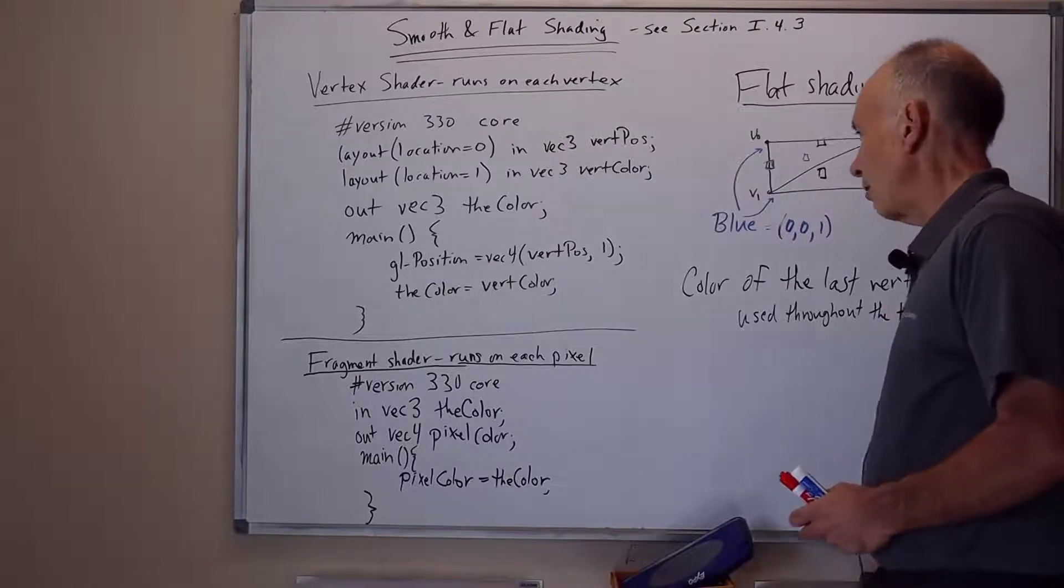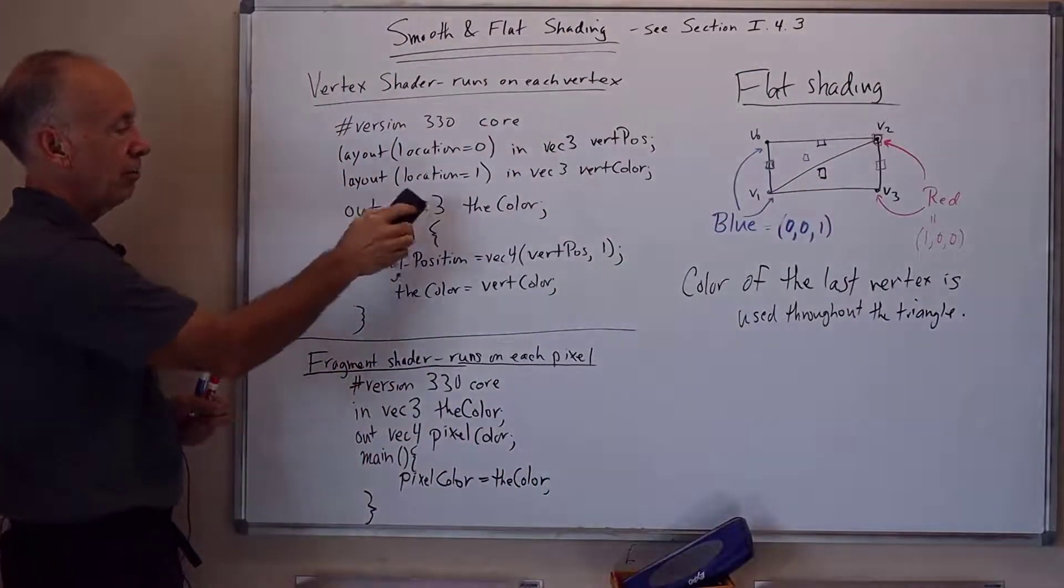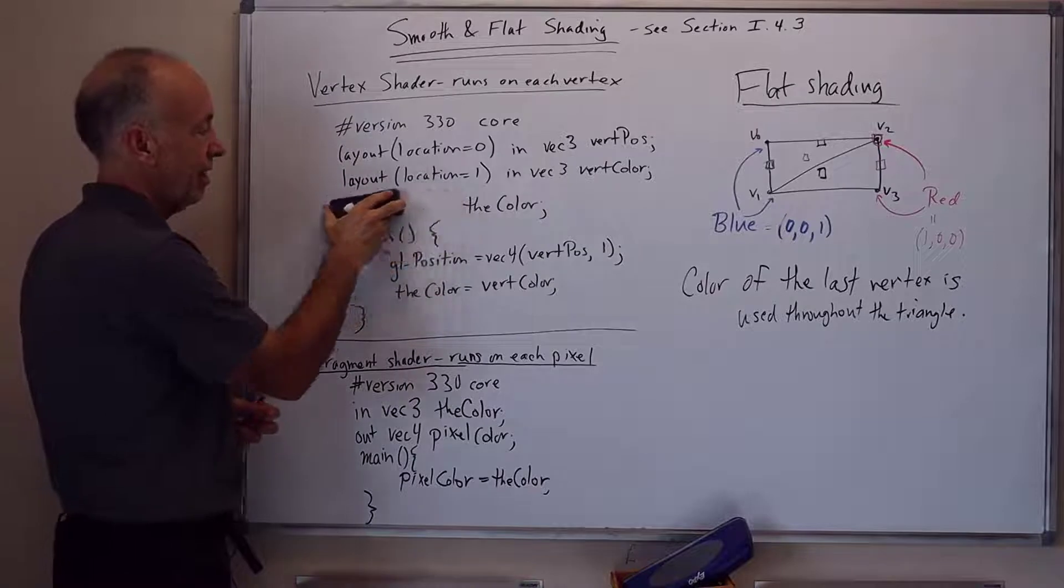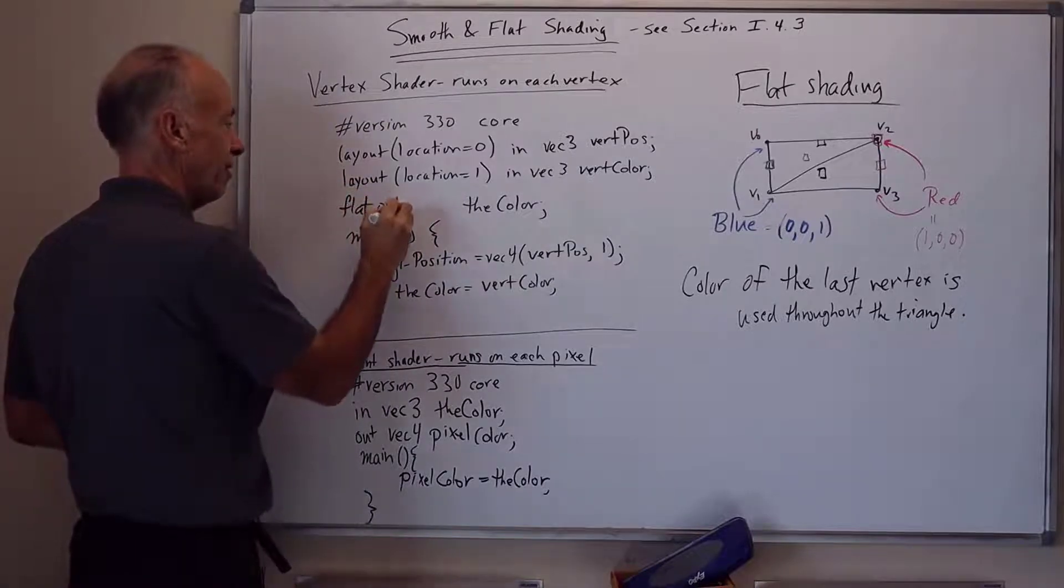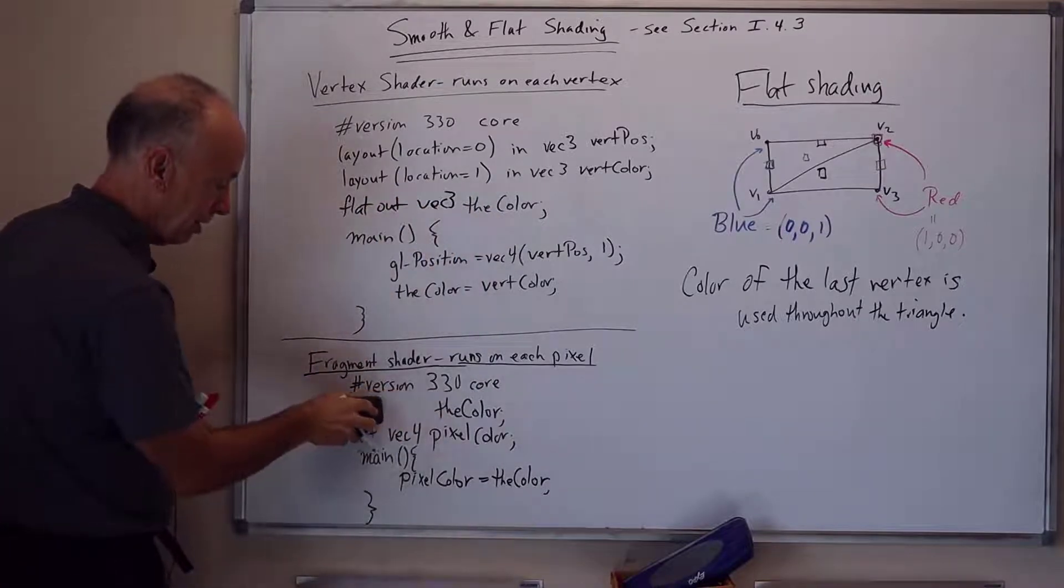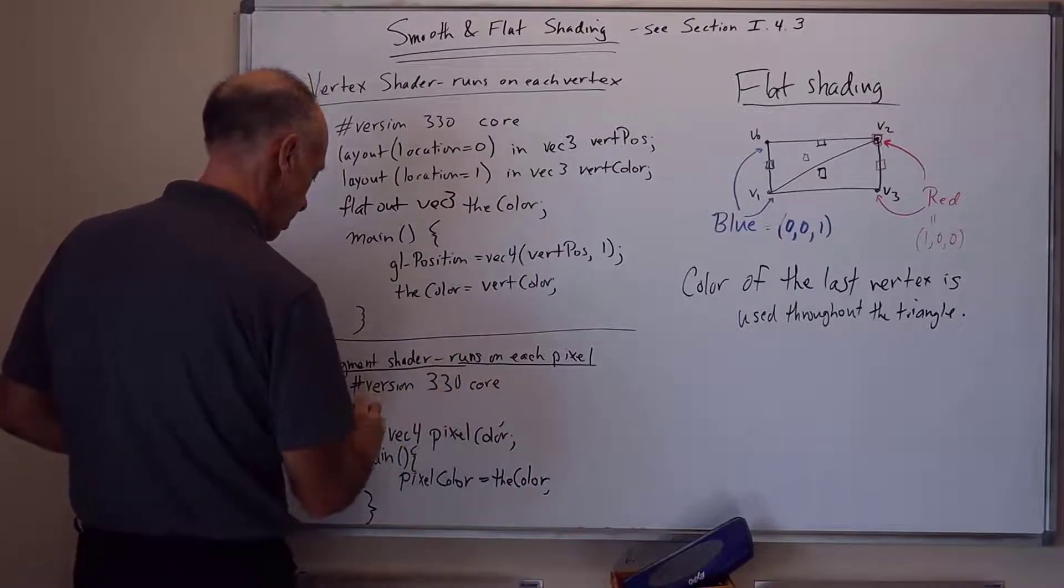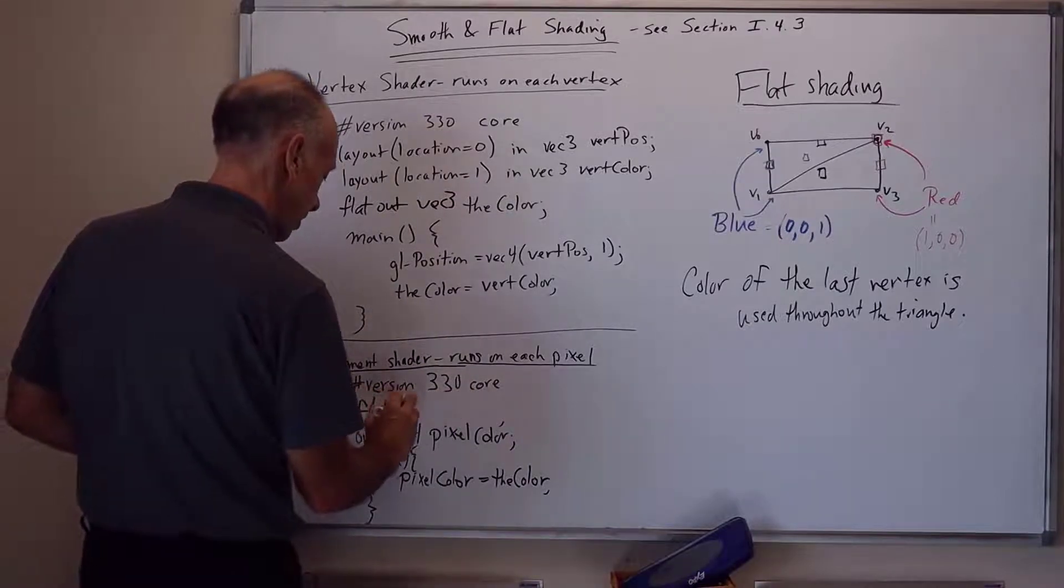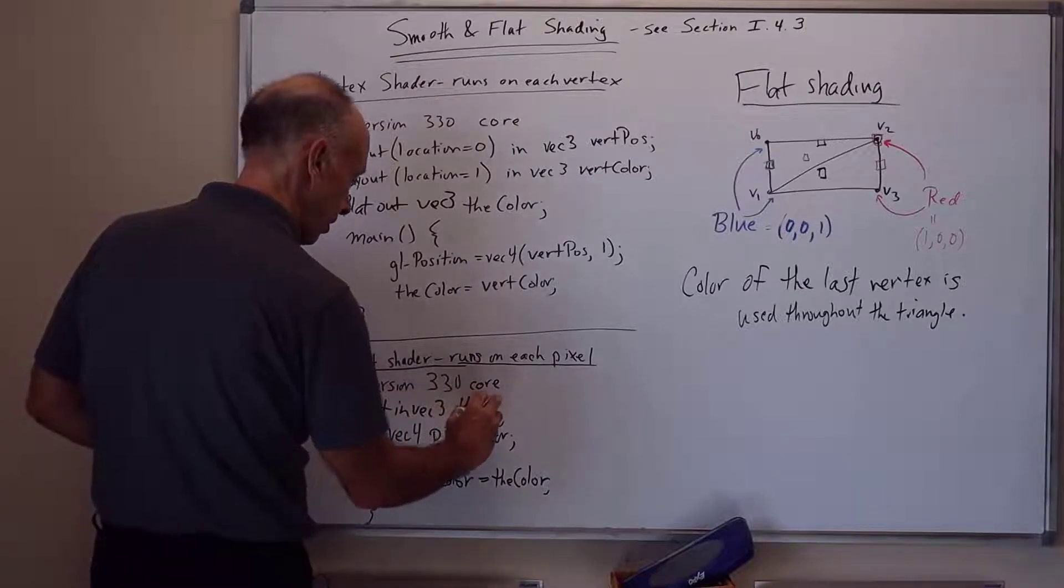So how this works in the code here is instead of saying out vec3 the color, we instead say flat out vec3 the color. And we have to have a corresponding change here to say flat in vec3 the color.